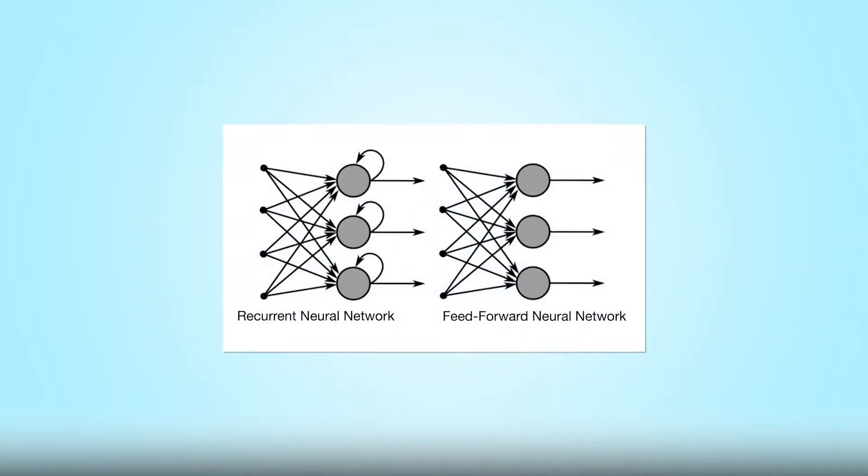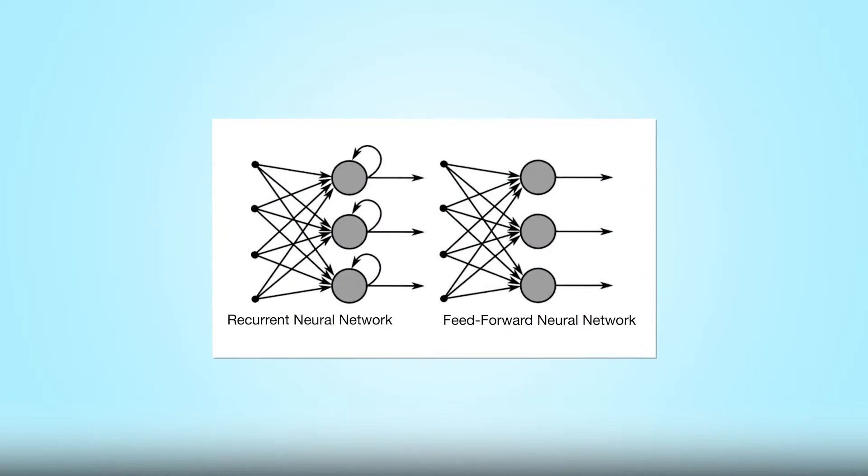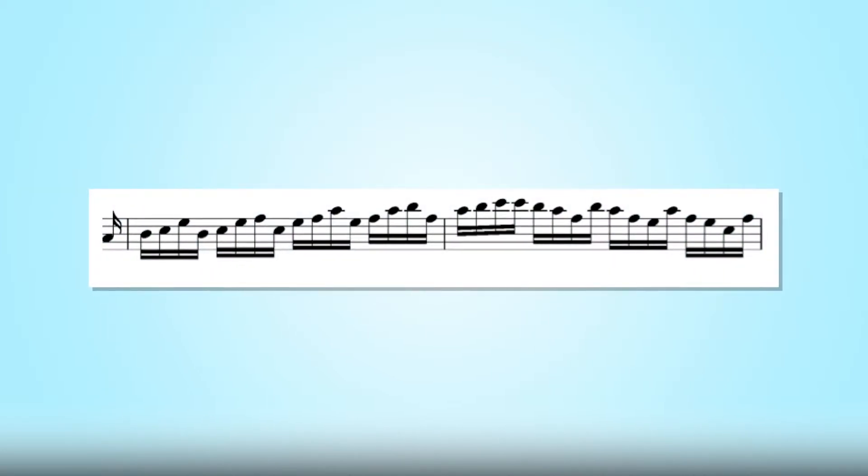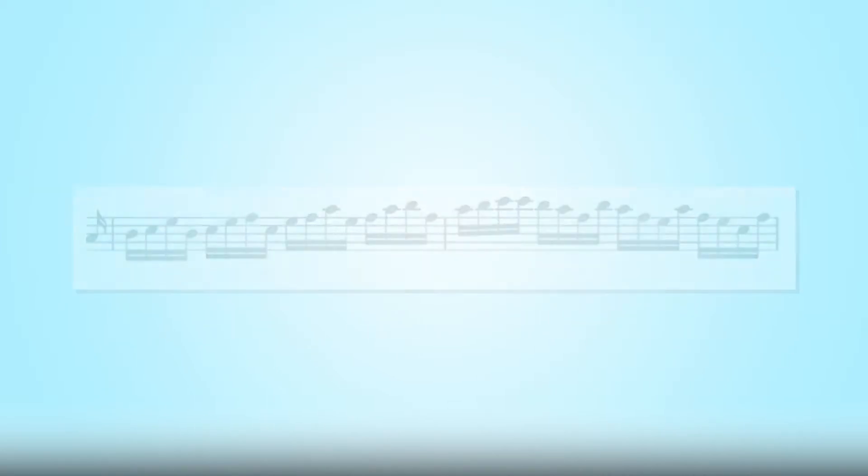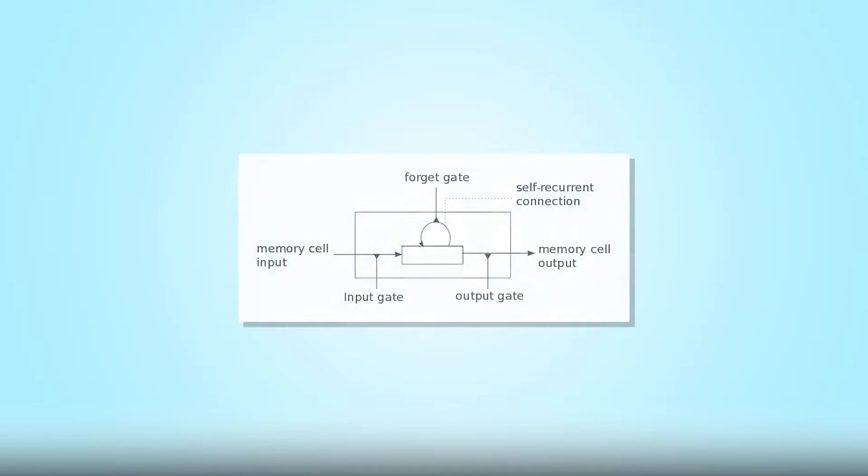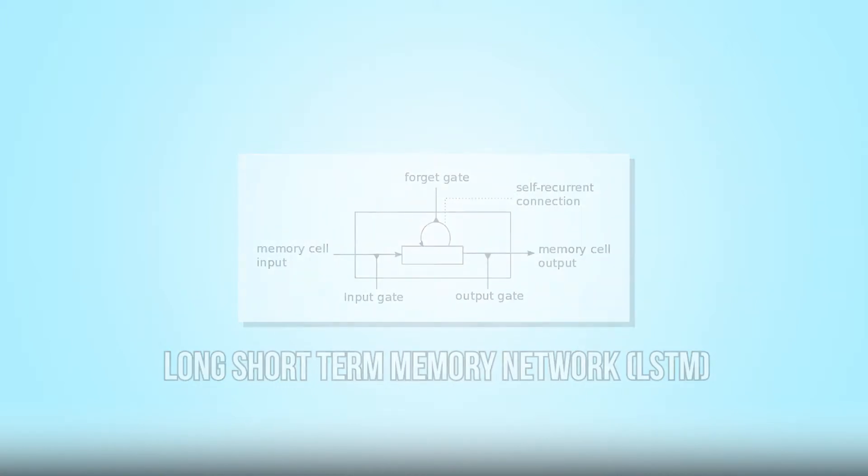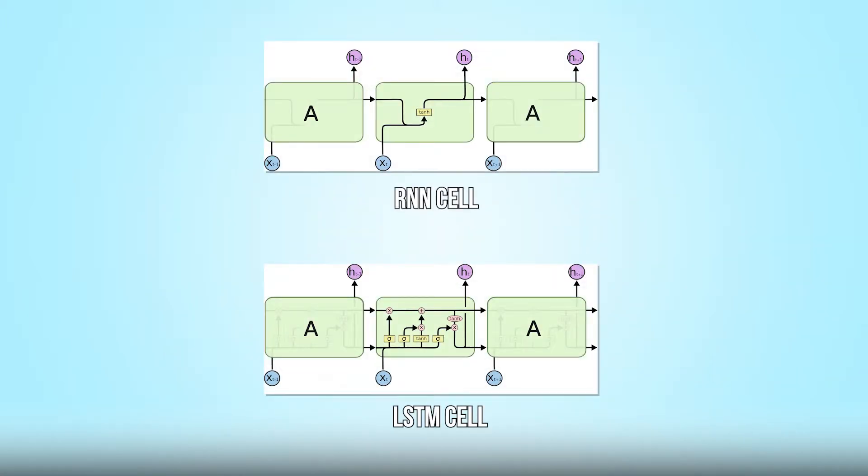Essentially, they have a feedback loop allowing information to persist. As you can imagine, this is a critical feature to generating coherent music as they are sequences. A subclass of RNNs are long short-term memory networks, LSTMs. Those are essentially RNNs that are able to learn longer-term dependencies thanks to a more complex cell structure.